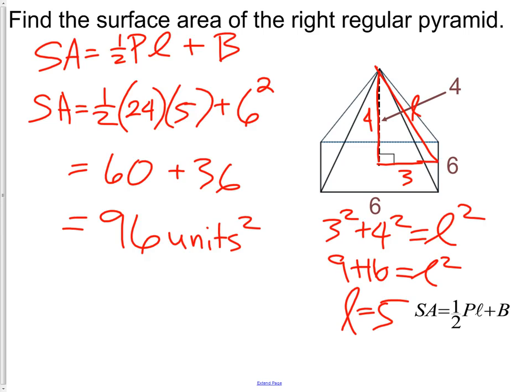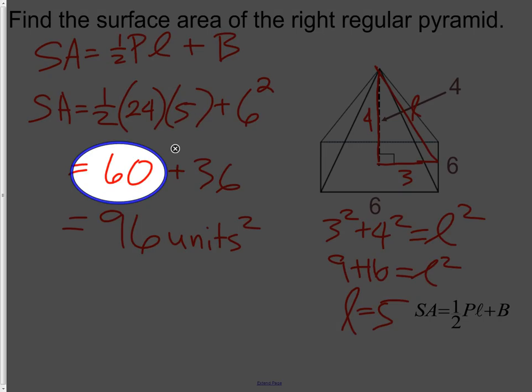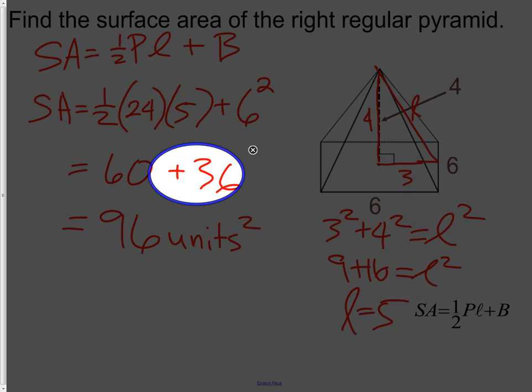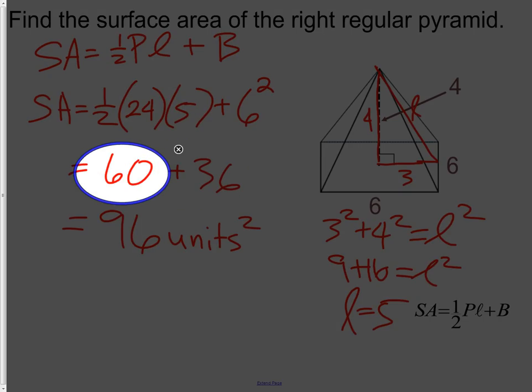If I only wanted the lateral area, I would use just the 60 because that was the lateral area. 36 was the base. To get lateral area, I wouldn't use the base.